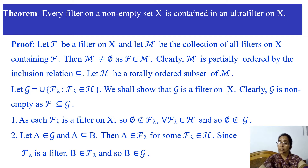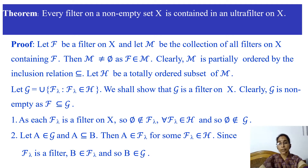Let G be the union of all members of the totally ordered set H. First, we show that G is a filter on X. Clearly G is non-empty, because F is contained in each F_lambda for F_lambda in H, and so F is contained in G.